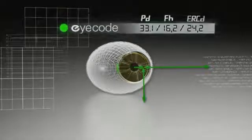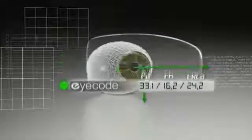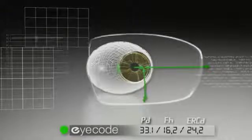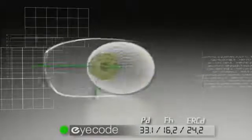These three measurements—PD, fitting height, and ERCD—build the very unique code of each eye, which forms the foundation of lens individualization based on the physiology of each wearer.